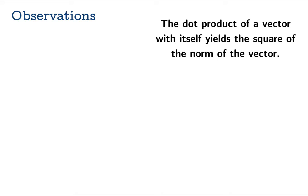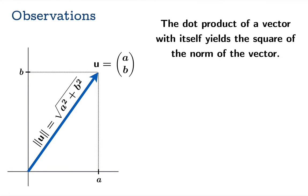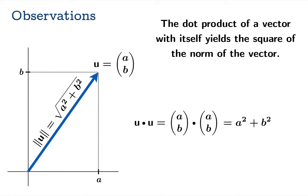Here's another observation: the dot product of a vector with itself yields the square of the norm of the vector. For a vector u with components a, b, the norm is √(a² + b²). If you calculate u·u, you get a² + b², which is the square of the norm. So u·u = ||u||². This gives the first hint that the dot product is telling you something about the geometry of the vectors.